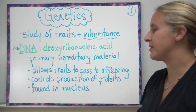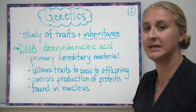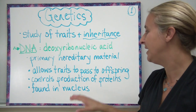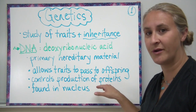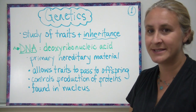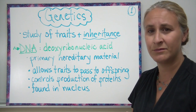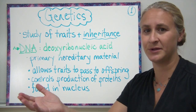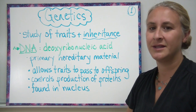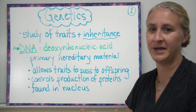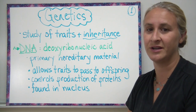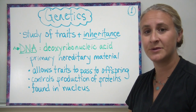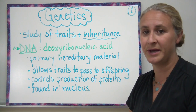DNA really is our primary hereditary material. It's the main thing that we use in order to pass on our traits to the next generation — it allows the traits to pass on to our offspring. Back in the day, most scientists didn't necessarily know how offspring kind of look like their parents or how these traits were passed on from generation to generation. It wasn't until Gregor Mendel really started studying pea plants that we understood how these traits were passed on.